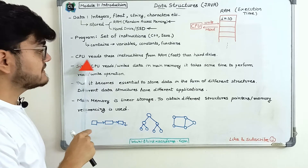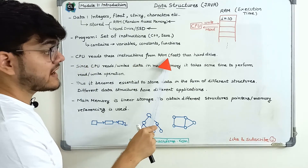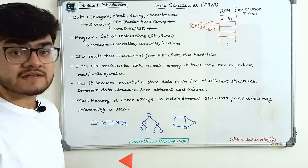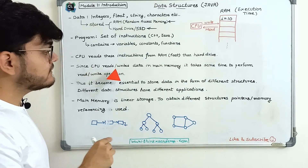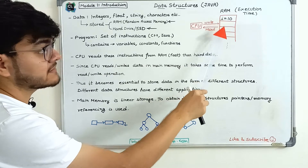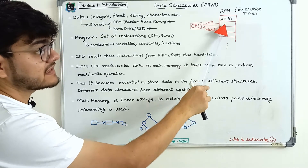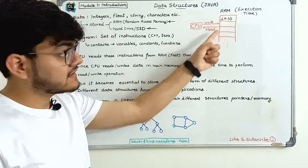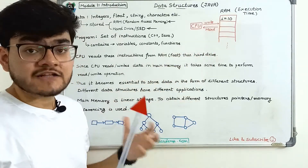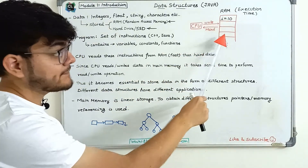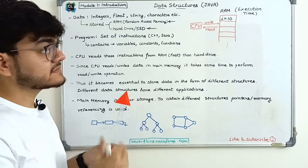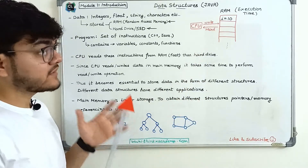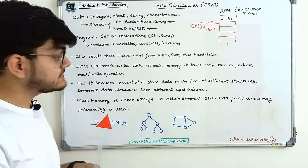The CPU reads instructions from RAM rather than the hard drive because RAM is faster. The CPU will read and write data stored in memory. RAM is a linear storage of memory — the blocks you see here are the physical representation of RAM. A RAM contains these byte blocks, and these blocks make up the whole RAM. So RAM is linear in structure.